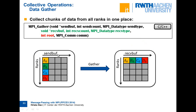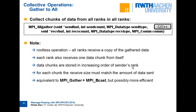Here is how gather works: initially each process holds a small chunk in its send buffer. After calling gather, the root rank receives the collection of all chunks concatenated. That is basically the reverse operation of scatter.